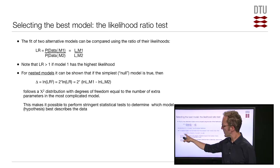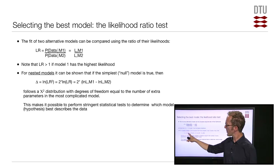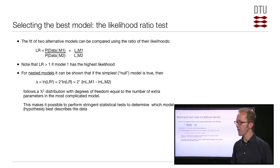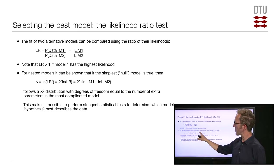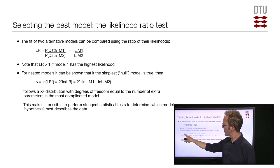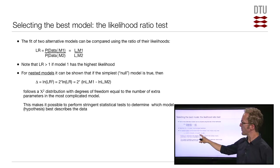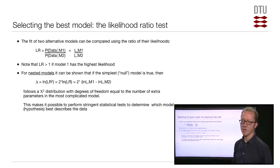The logarithm of the squared likelihood ratio can be simplified: the logarithm of something squared lets you move the two out in front. The logarithm of a ratio is the same as the logarithm of the numerator minus the logarithm of the denominator. So delta can be expressed as two times the log likelihood of model one minus the log likelihood of model two.